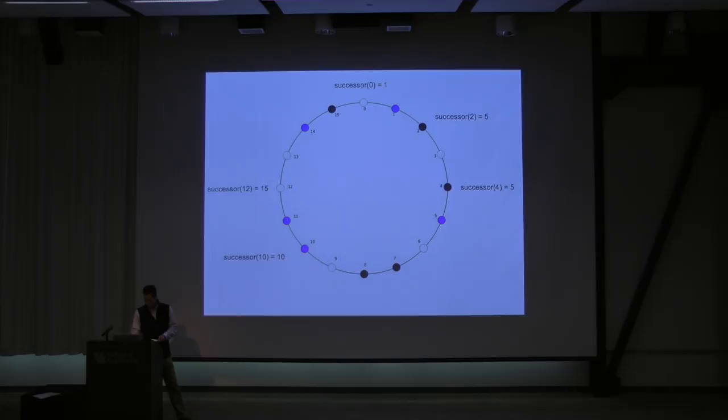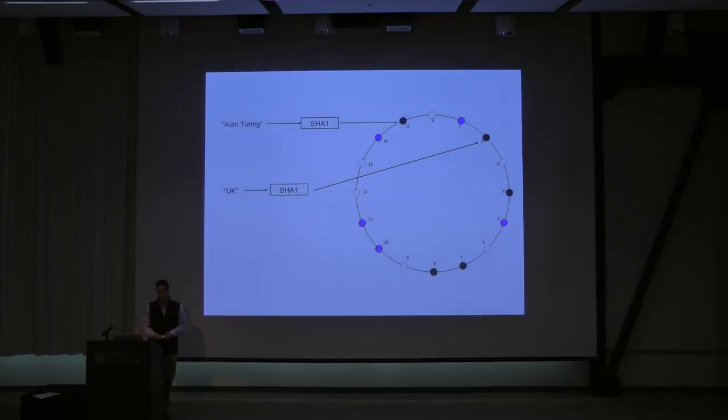So let's talk about how this works in practice, going back to my example. Say, so to do a lookup, you have to make a connection to the network. So you connect to some node in the network. Let's say you connect to node 5, and you want to find the article on the University of Kentucky. Well, that's really easy. Node 5 responds to that request, right, because it's the successor of the University of Kentucky's identifier.